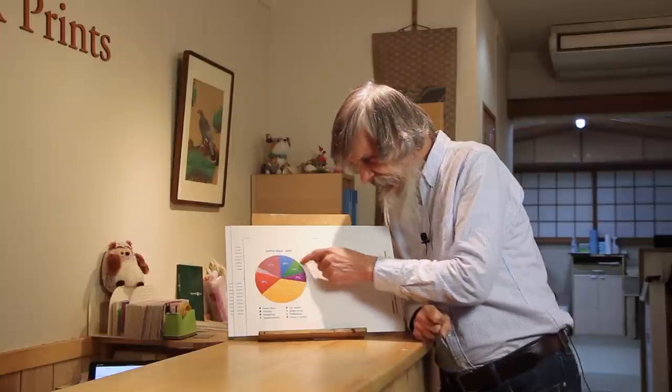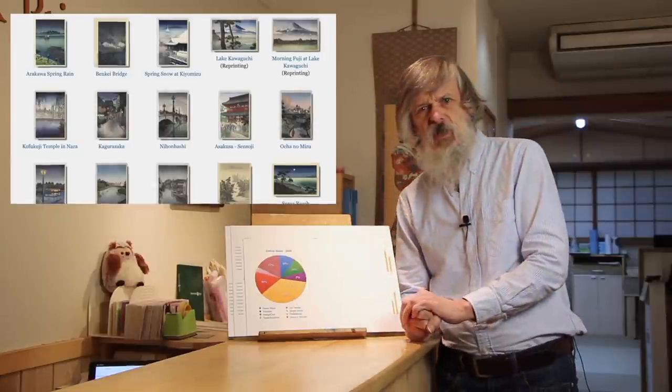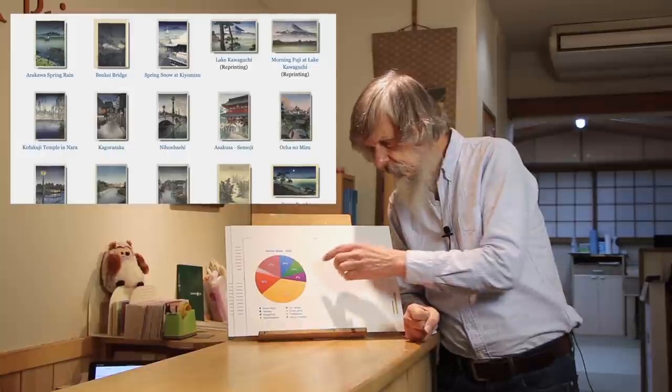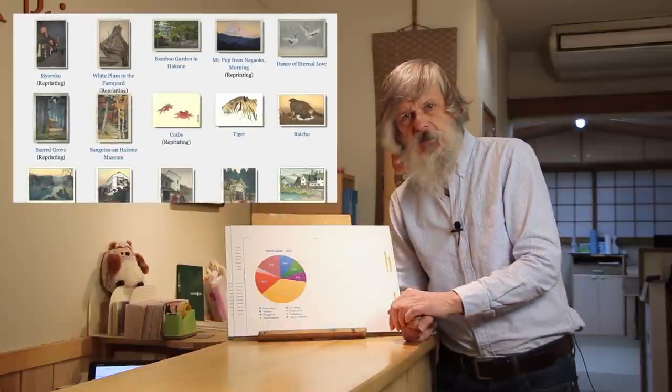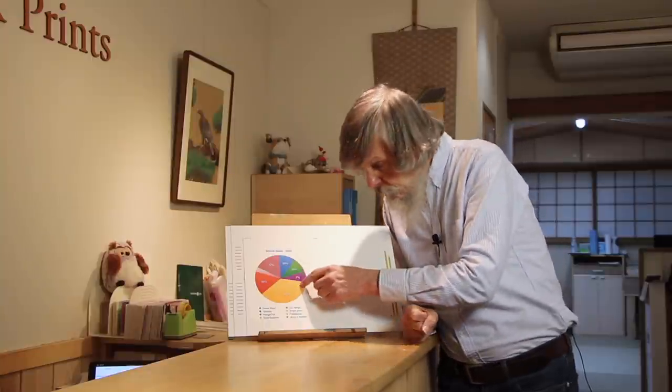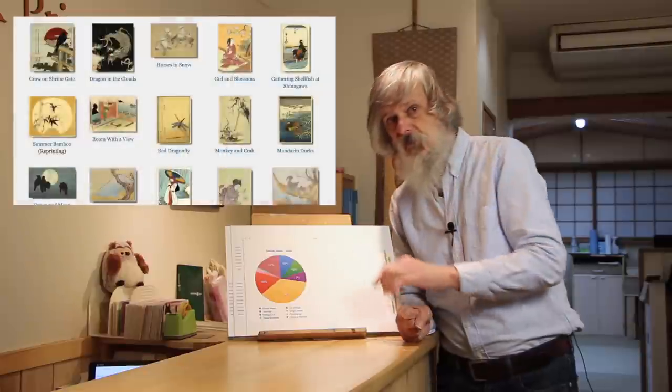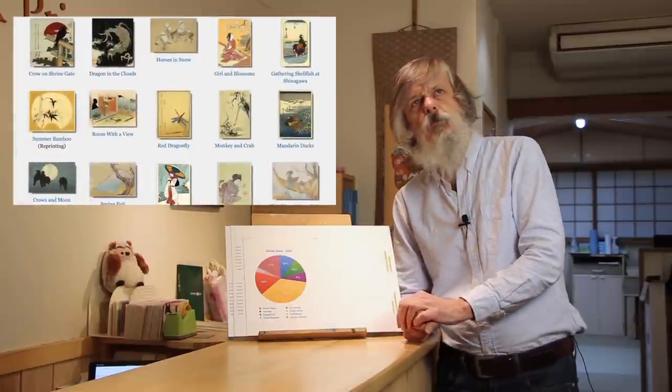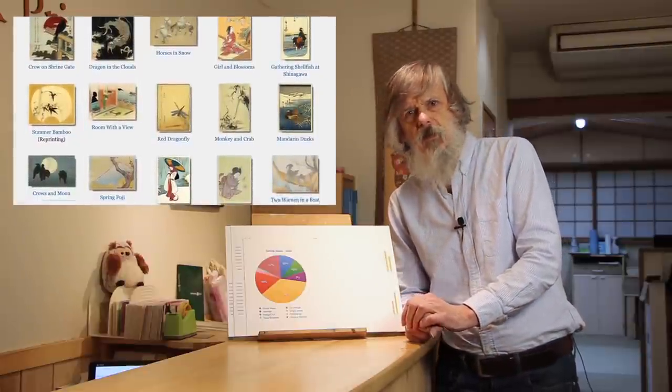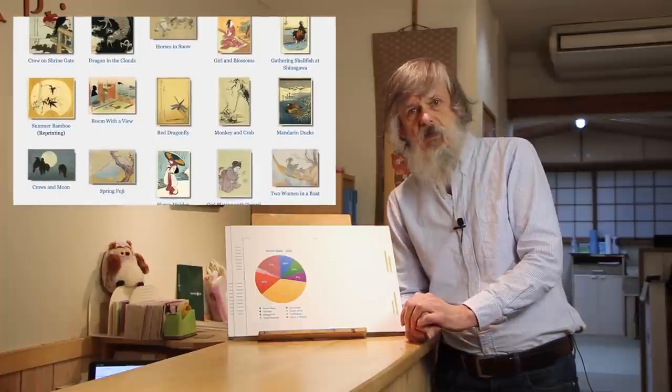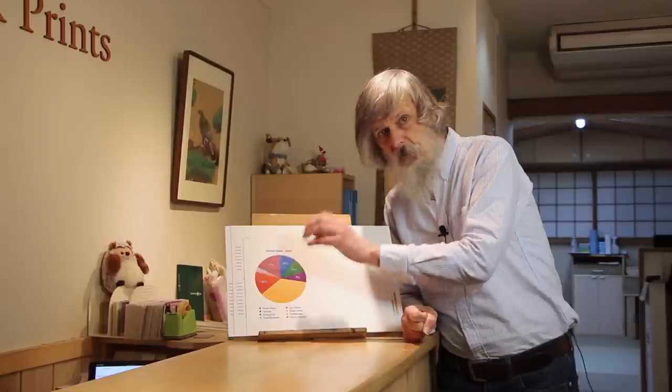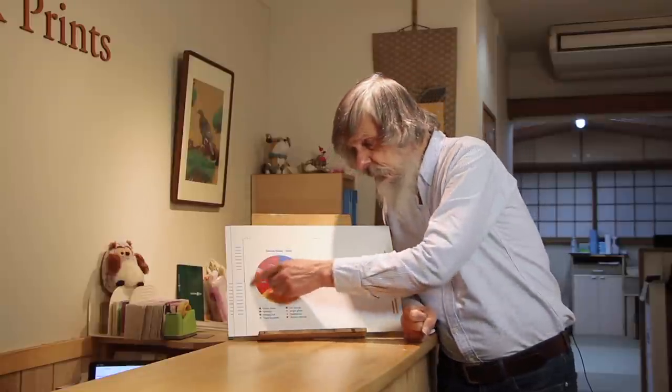These next two, 10% and 7%, are our Shin Hanga prints, the prints we received from the Doi Hanga people and the Yoshida family. The 30-odd percentage group, the largest single category, these are the prints we're making from blocks I carved back when I was making my Sudimono albums. These are one-by-one print sales.